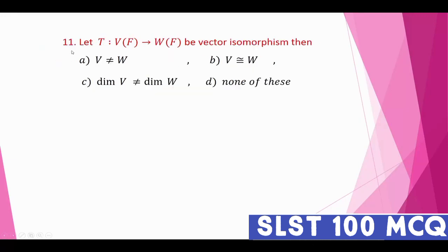Question eleven: let T from V_F to W_F be a vector isomorphism. Which is correct? The options include V equal to W, V isomorphic to W, dimension of V not equal to dimension of W, or none of these. For an isomorphism, V is isomorphic to W — that is the correct option.